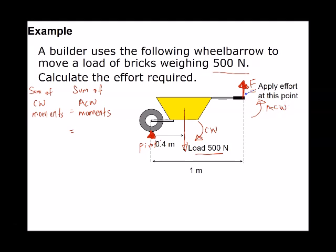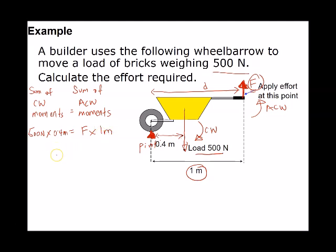The clockwise moment is 500 newton × 0.4 m. The anti-clockwise moment is F × 1 m. Solving: 500 × 0.4 = 200 = F × 1, therefore F = 200 newton.